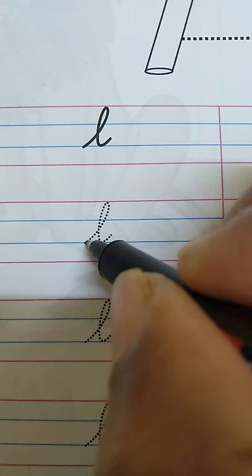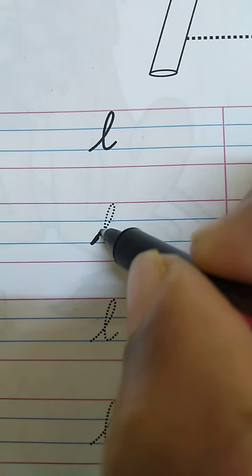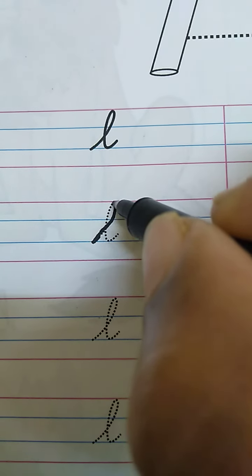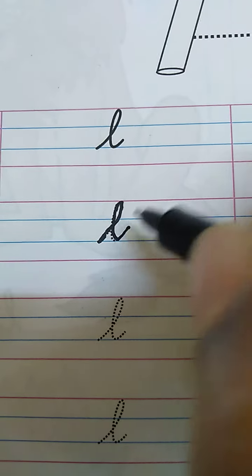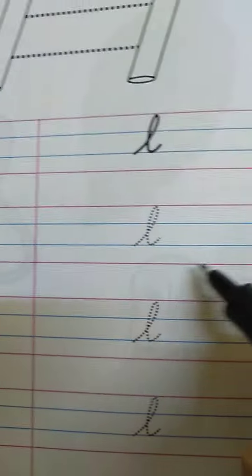Let's do it one more time. Start from the blue line. Go till the pink line with the slanting line. Make a small loop and come down. And this is the letter L.